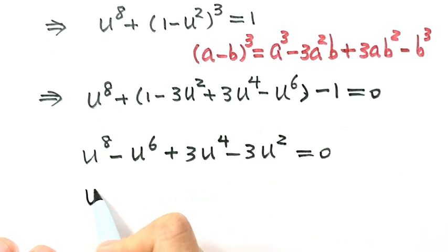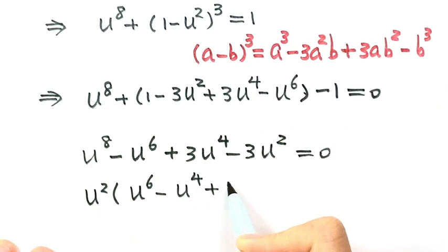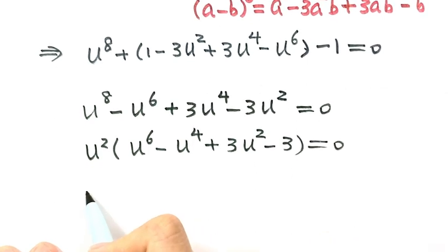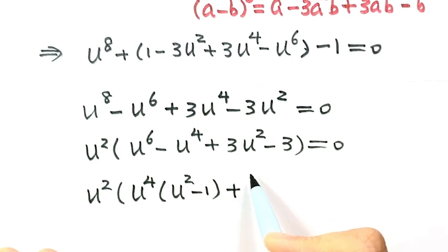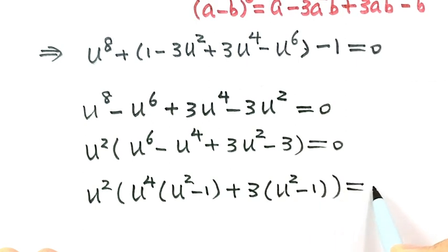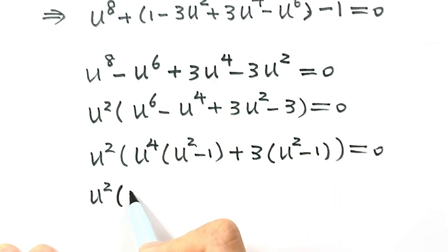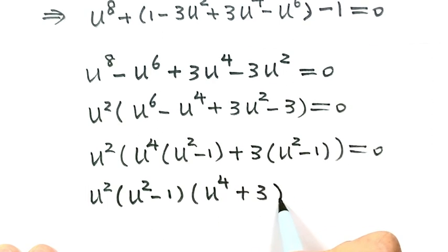Taking out the common factor u²: u²(u⁶ minus u⁴ plus 3u² minus 3) equals 0. Combining terms inside the parentheses and factoring out u⁴ and then 3, we find a common factor of (u² minus 1). Factoring that out gives u²(u² minus 1)(u⁴ plus 3) equals 0.